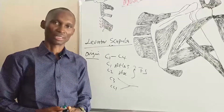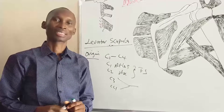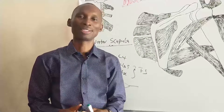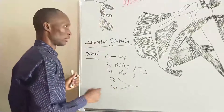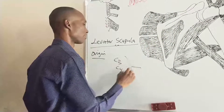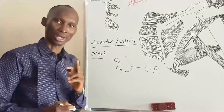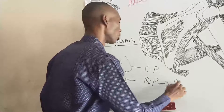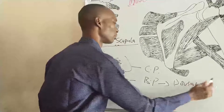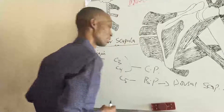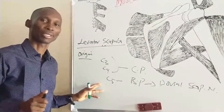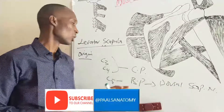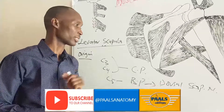Regarding innervation, this muscle is special because it receives innervation from two plexuses. First, from the cervical plexus — specifically C3 and C4 cervical nerves. Second, from the brachial plexus — specifically C5, which is carried by the dorsal scapular nerve. So the levator scapula gets innervation from C3 and C4, branches from the cervical plexus, and from C5 via the dorsal scapular nerve, which is a supraclavicular branch of the brachial plexus.